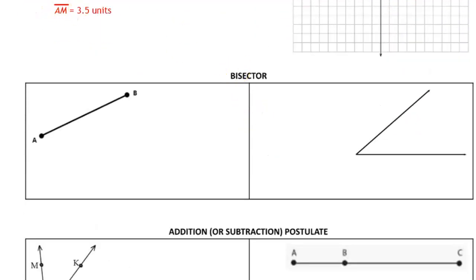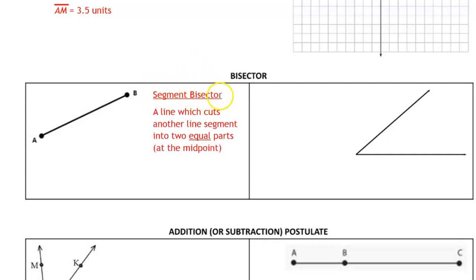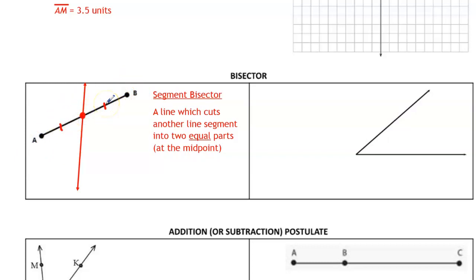First, let's talk about bisectors — another piece of vocabulary you need for geometry. A segment bisector, also known as a midpoint, is a line which cuts another line segment into two equal parts at the midpoint. You can see a red line drawn here — this red line is the segment bisector; it cuts line segment AB into two equal parts. In geometry, when we want to identify that two segments are congruent, we use little hash marks or tick marks to indicate they're the exact same measure.